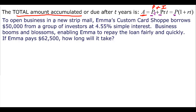Our next problem: Emma's Custom Card Shop borrows $50,000 — that's the principal — from a group of investors at 4.55%, which is our rate, although we have to make it a decimal. The business booms and Emma repays the loan quickly. If she pays $62,500, which is the accumulated amount, how long was she using this loan?